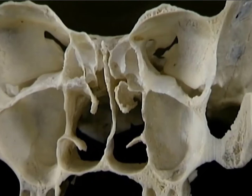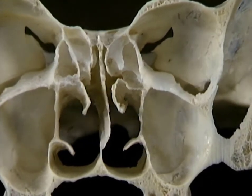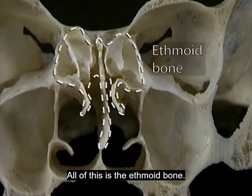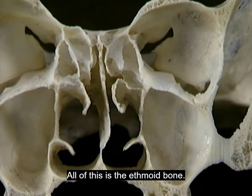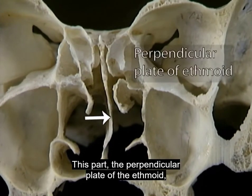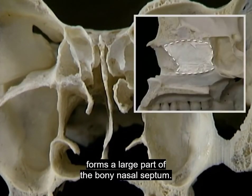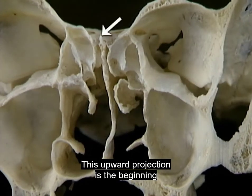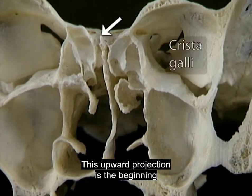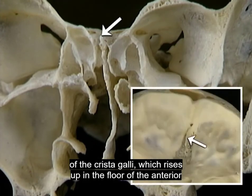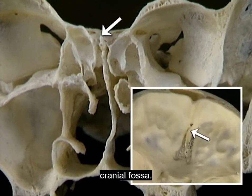The ethmoid bone is a fragile coalition of parts. The best way to see all of them is to go back to the skull divided in the frontal plane. This part, the perpendicular plate of the ethmoid, forms a large part of the bony nasal septum. This upward projection is the beginning of the crista galli, which rises up in the floor of the anterior cranial fossa.